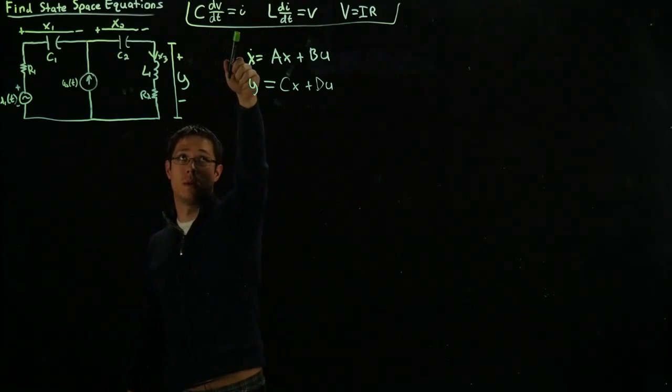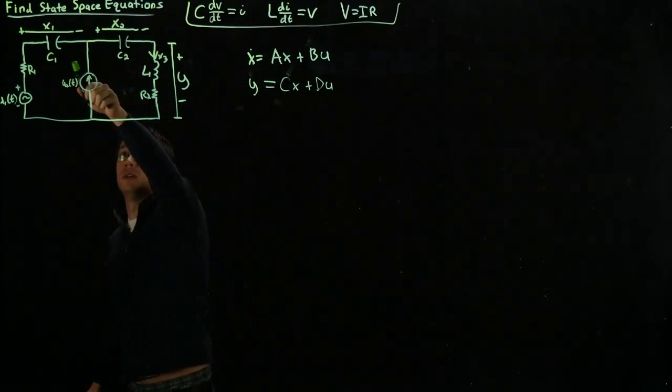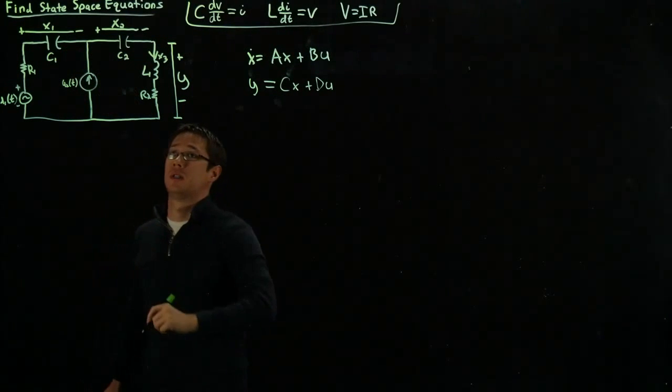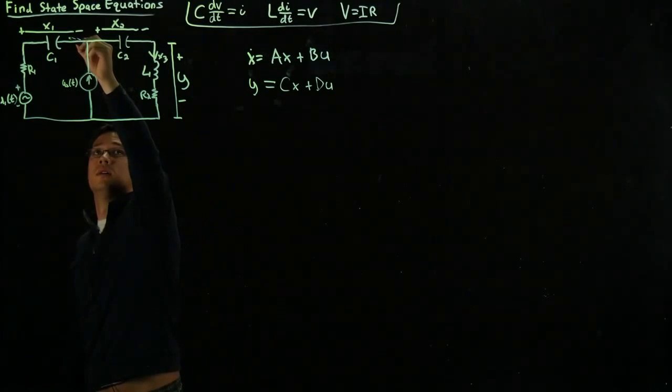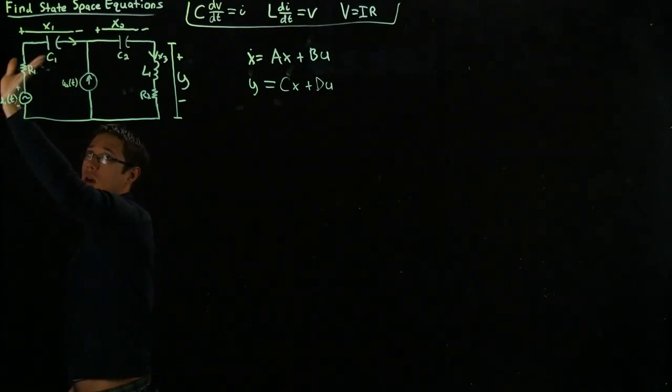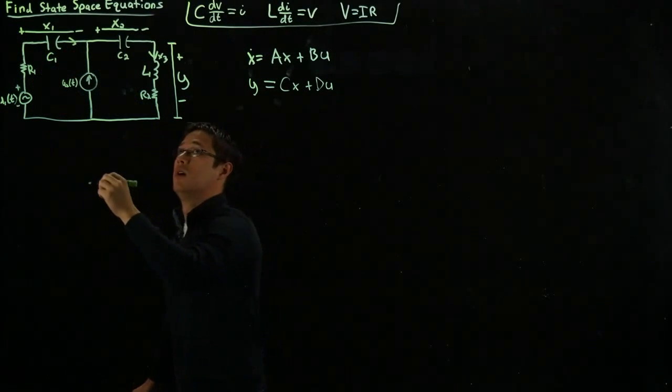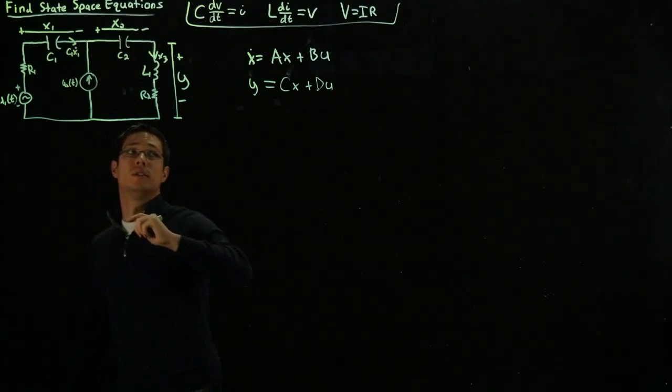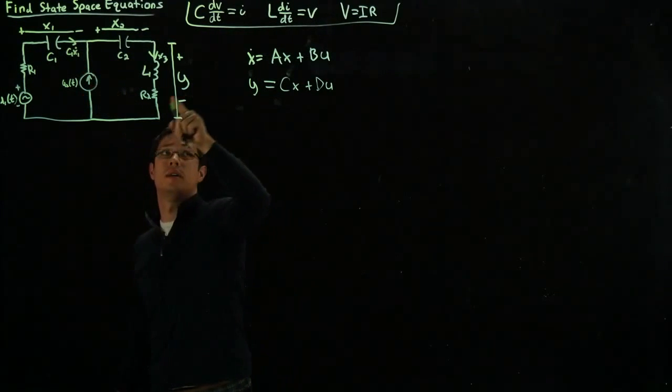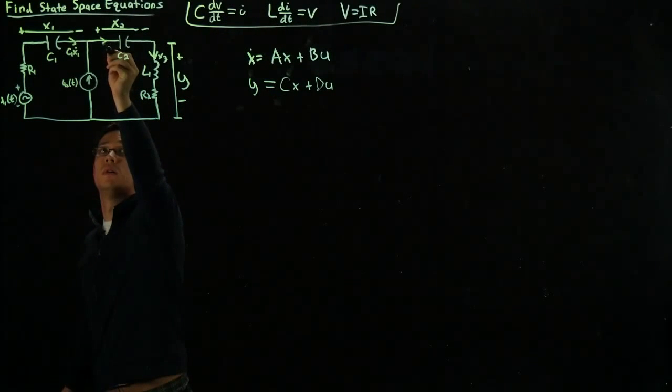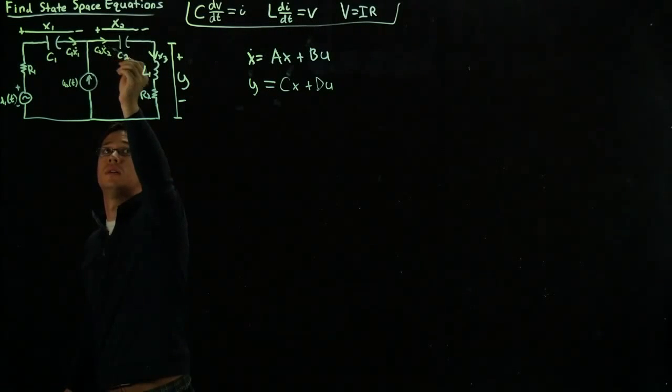The next thing I will do is define the derivative of these states. As we can see for the equation for capacitance, the derivative is the current through this branch. So if I define the current to be this way, because this is going against the plus, we have C1 x1 dot. You can immediately see that x1 dot is dV/dt. Similarly, for the second capacitor, the current will be going in this direction, which is C2 x2 dot.